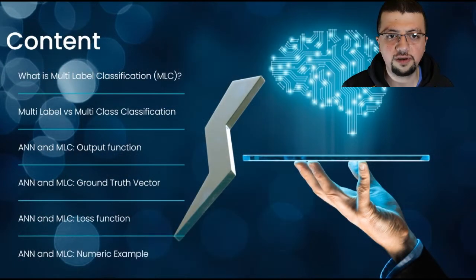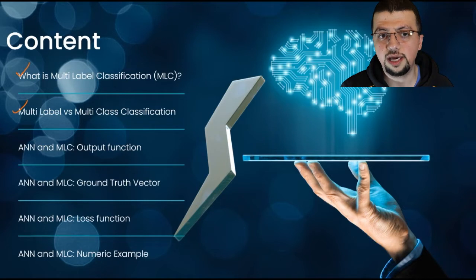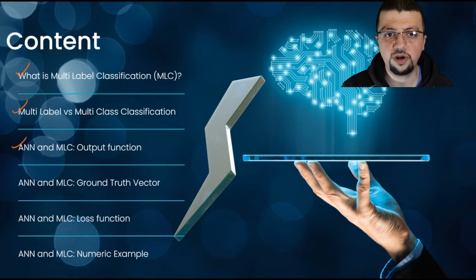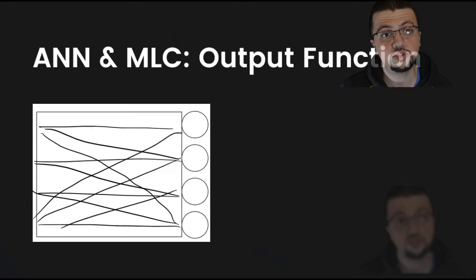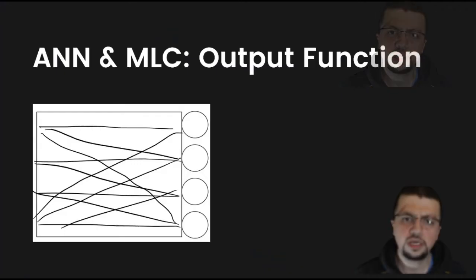So we did talk about some items on our list already. Today is going to be about ANN and multi-label classification — specifically the output function and the things you need to know about it.